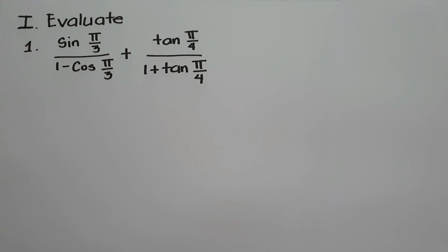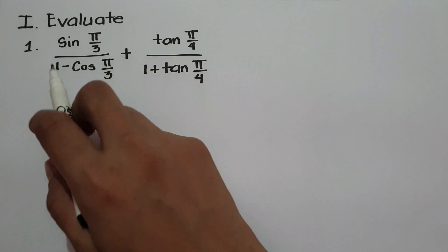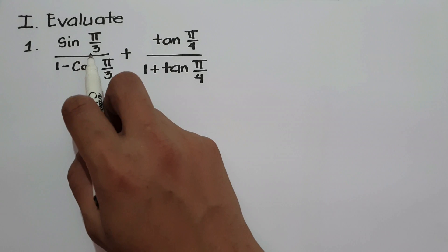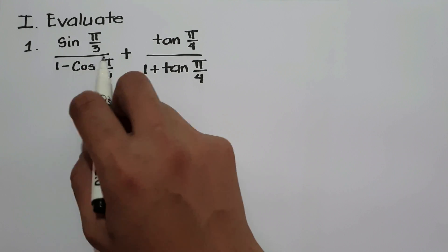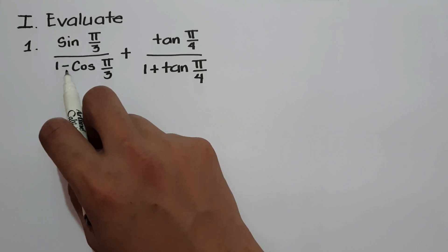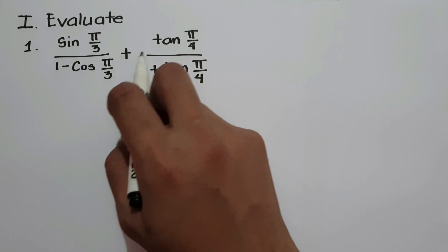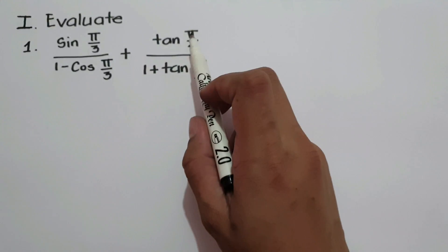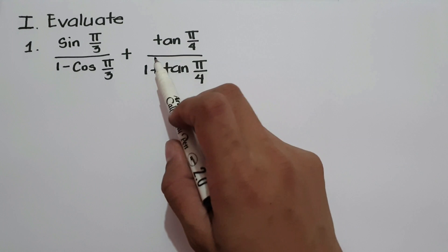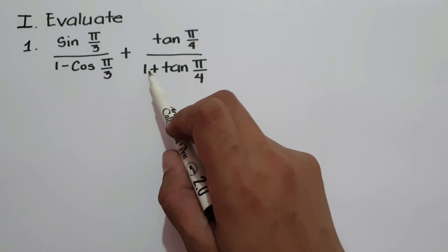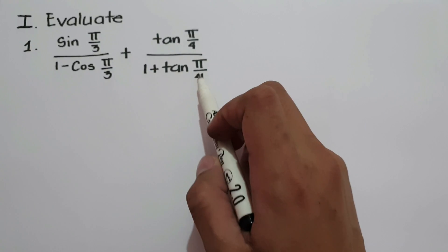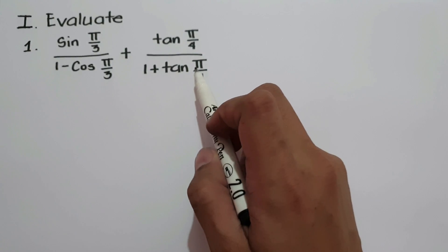In this video, we are going to evaluate the given expression: sin(π/3) divided by 1 minus cosine(π/3), plus tangent(π/4) divided by 1 plus tangent(π/4).